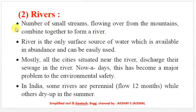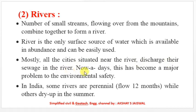Rivers: a number of small streams flowing from mountains combine together to form a river. A river is the only surface source of water available in abundance and can be easily used. Most cities situated near rivers discharge their sewage into the river, which has become a major environmental problem. In India, some rivers are perennial and flow 12 months of the year, while others dry up in summer.